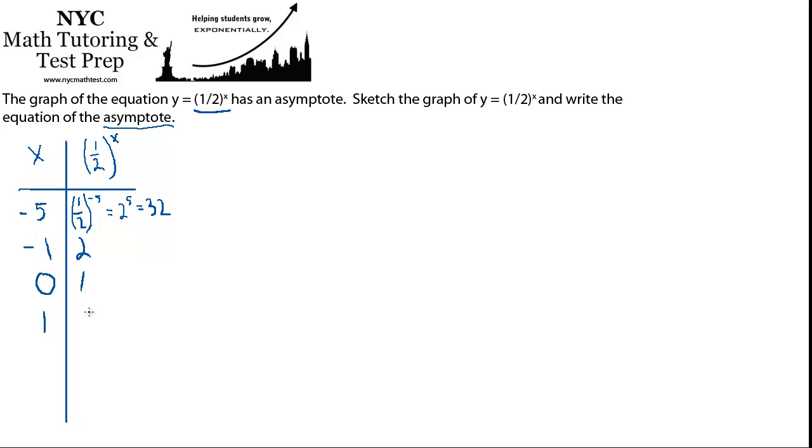If we put in 1, one-half to the 1 is just still one-half. What if we put in 2? One-half squared is one-quarter. What if we put in 5? One-half to the 5th would be 1 over 32.